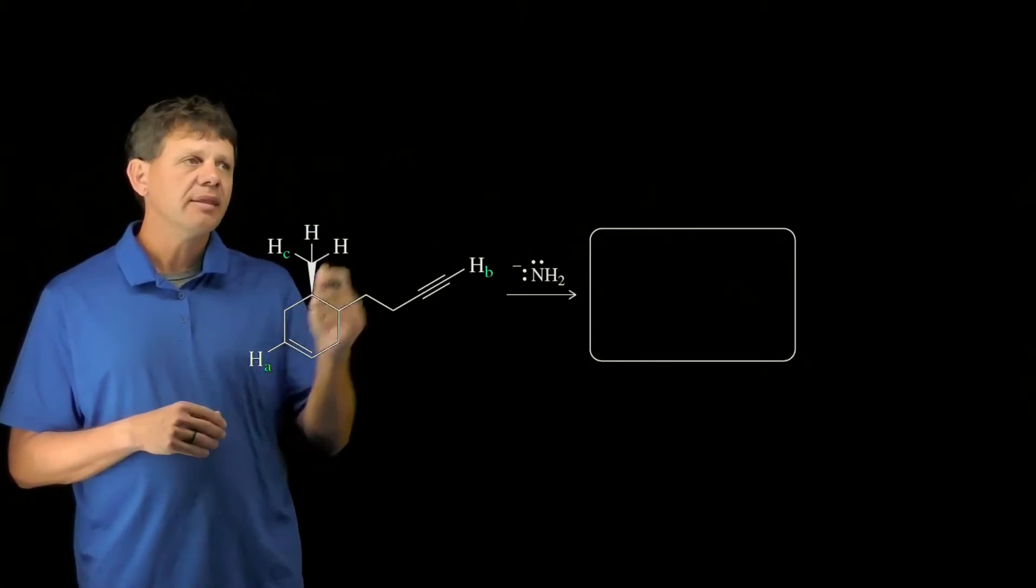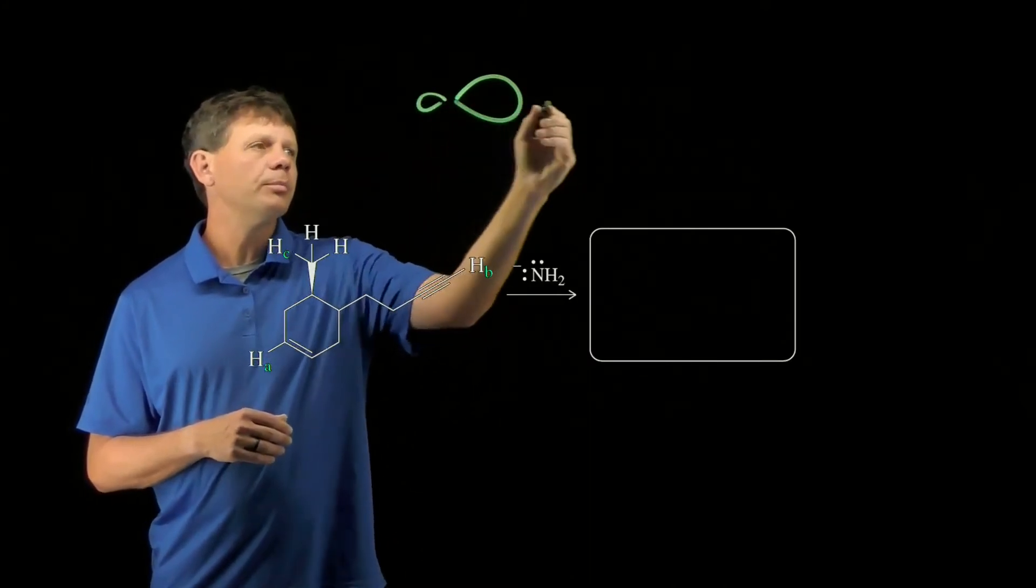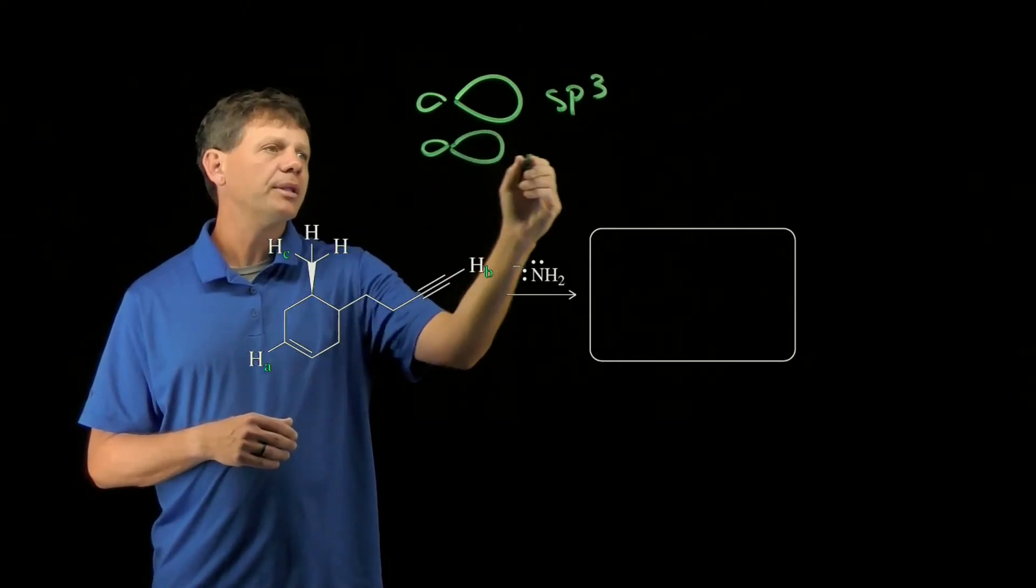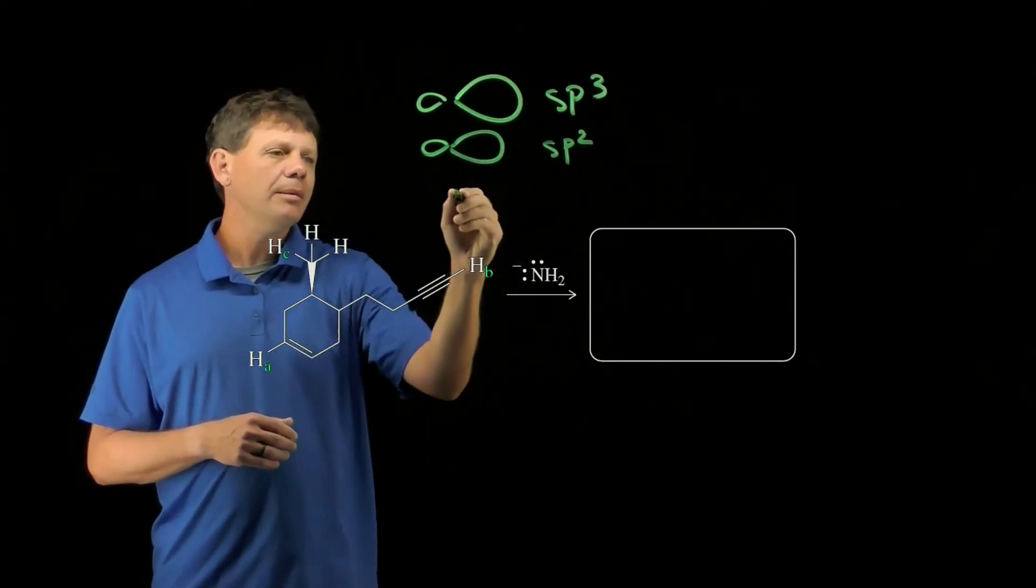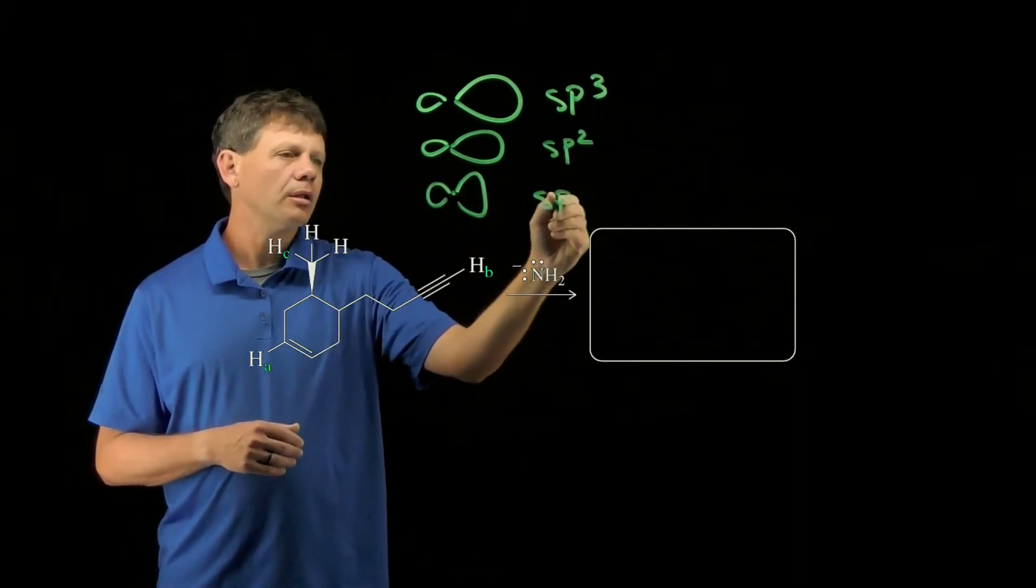As a result, the sp hybridized... let's sketch the different orbitals. This would be sp3, sp2 might look something like this, and maybe exaggerated for effect, sp would look like this.